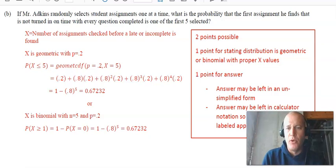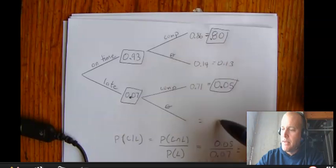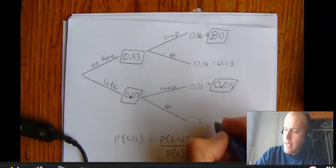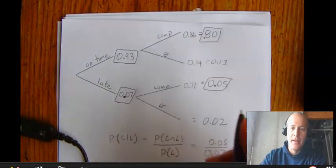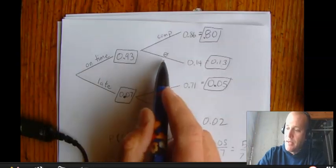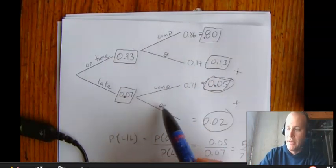Mr. Atkins randomly selects student assignments one at a time. What's the chances the first assignment he finds that is not turned in on time with every question complete is one of the first five selected. This was the hardest question on the entire thing. I think there's some ambiguity playing here. Let's look at our tree diagram again. I'm missing this fourth number. So 80 plus 13 plus 5% leaves 2%. So the chance of being late or incomplete is 13% are on time but incomplete and the 7%. So these three numbers is the chances that an assignment is late or incomplete. So that's a 20% chance.